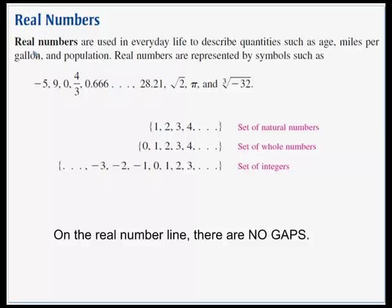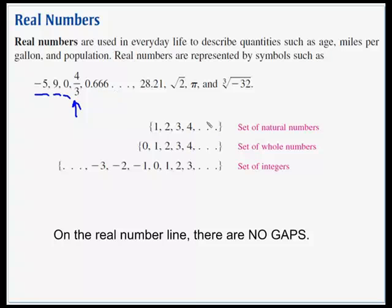So what are real numbers? They are used in everyday life to describe quantities such as age, miles per gallon, or population. Real numbers are represented by symbols such as negative 5, 9, 0, the fraction 4 thirds, 0.666 repeating, 28.21, the square root of 2, the number pi, and the cube root of negative 32.